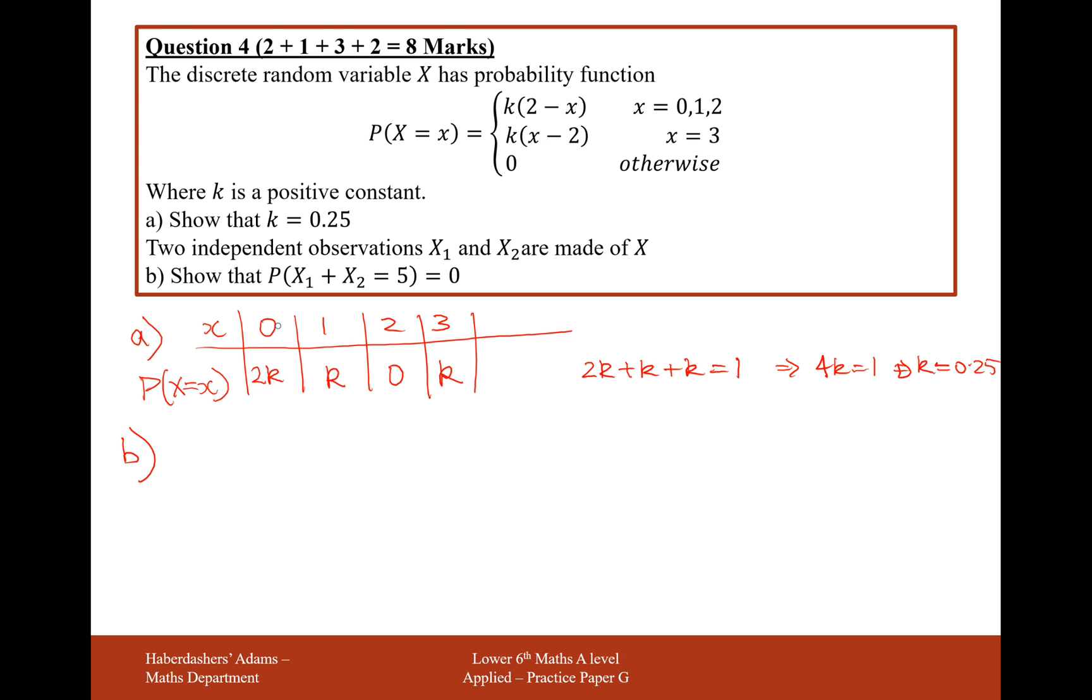How could we make 5 out of the numbers 0, 1, 2, and 3? I can only see one way, and that's by doing 2 and 3. So the roll on the first dice may be 2, the roll on the second dice may be 3, or vice versa. However, the probability of rolling a 2 is equal to 0. As the probability of x equals 2 is 0, there is no way in which X1 add X2 can equal 5 from the values.